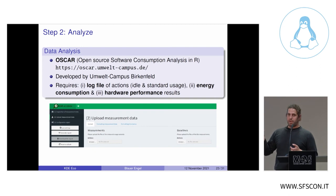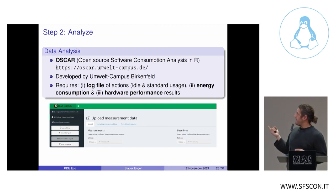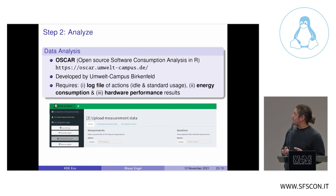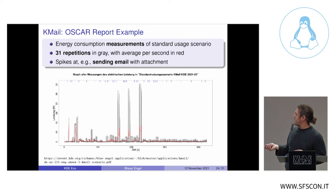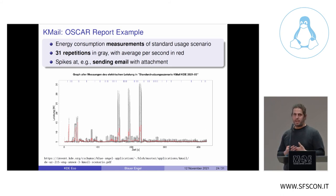That's the measurement part — step one. Step two is Analyze. The Umweltcampus Birkenfeld has developed an online tool to produce reports automatically. You need a log file of the actions for both idle mode and standard usage scenario, as well as the energy consumption and hardware performance results. You feed that into OSCR — the Open Source Software Consumption Analysis in R tool — and get back a full report. Here is an example of the K-Mail report: this shows the standard usage scenario, and the gray lines represent 31 repetitions of the measurements, giving a statistically valid dataset.